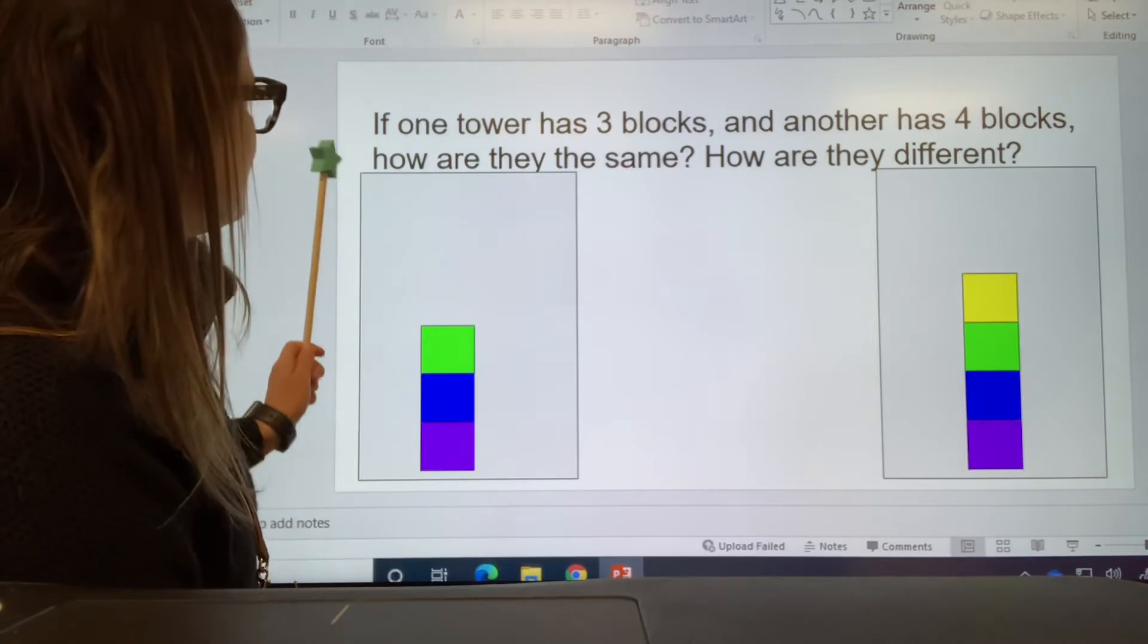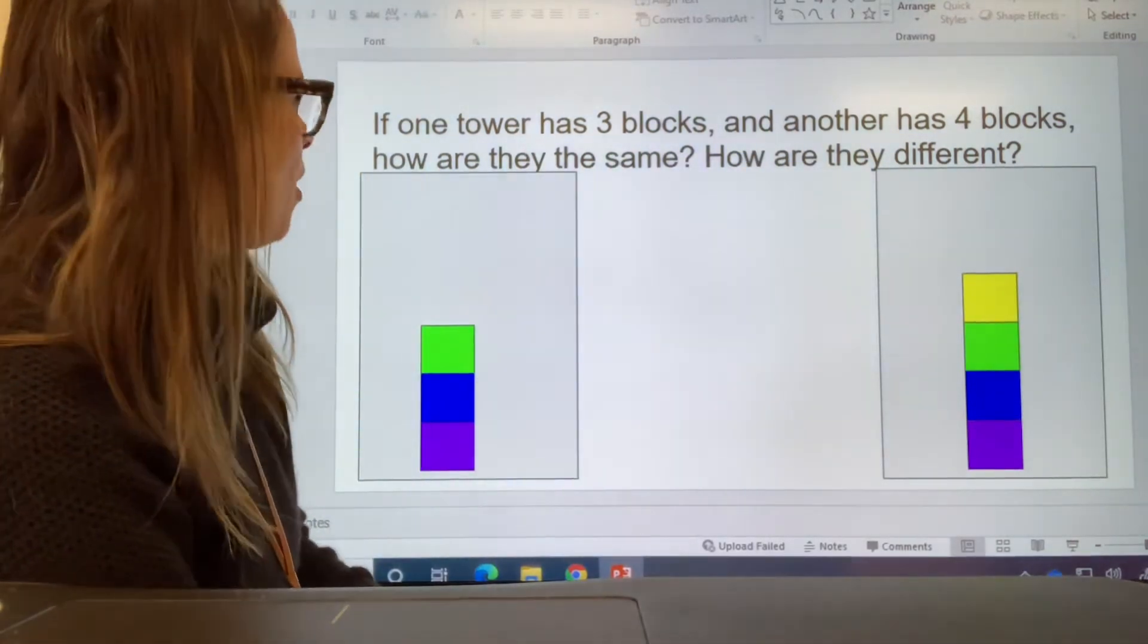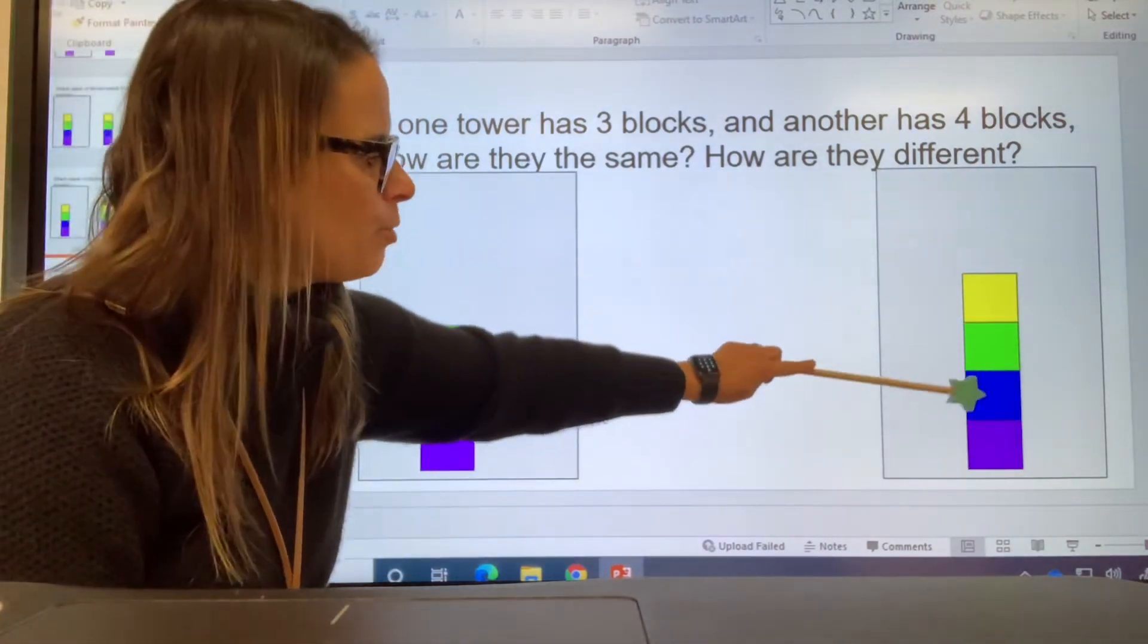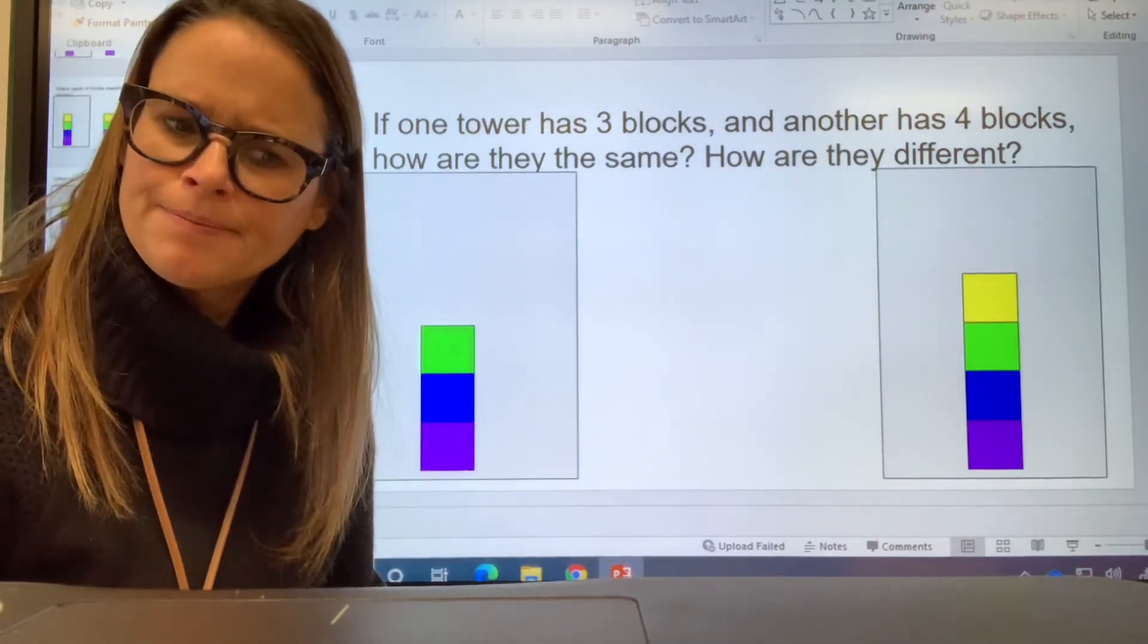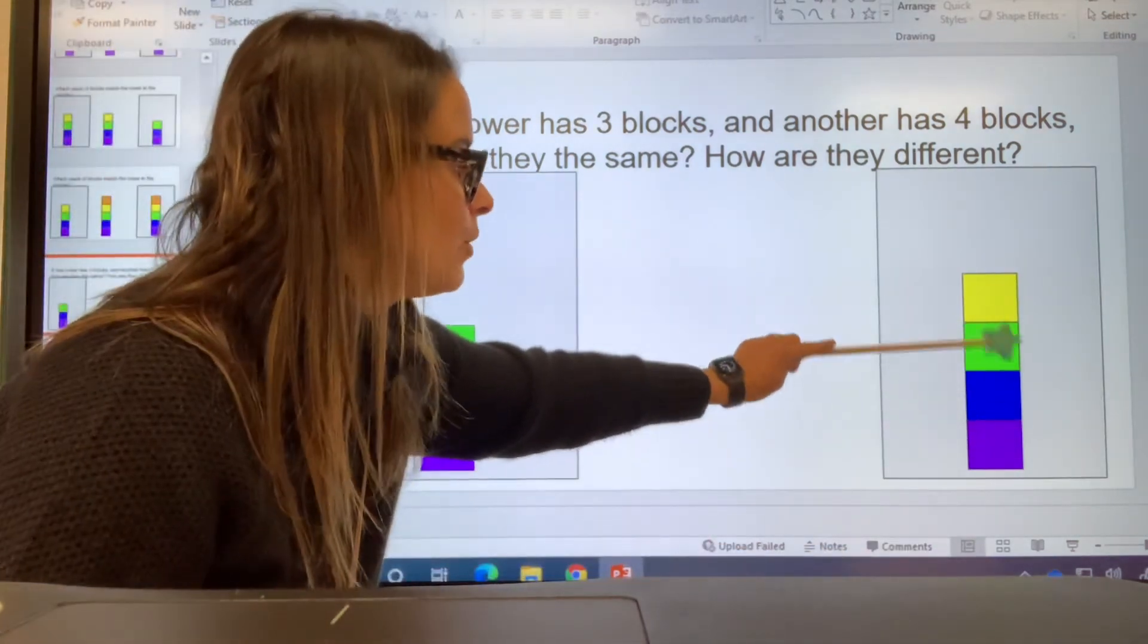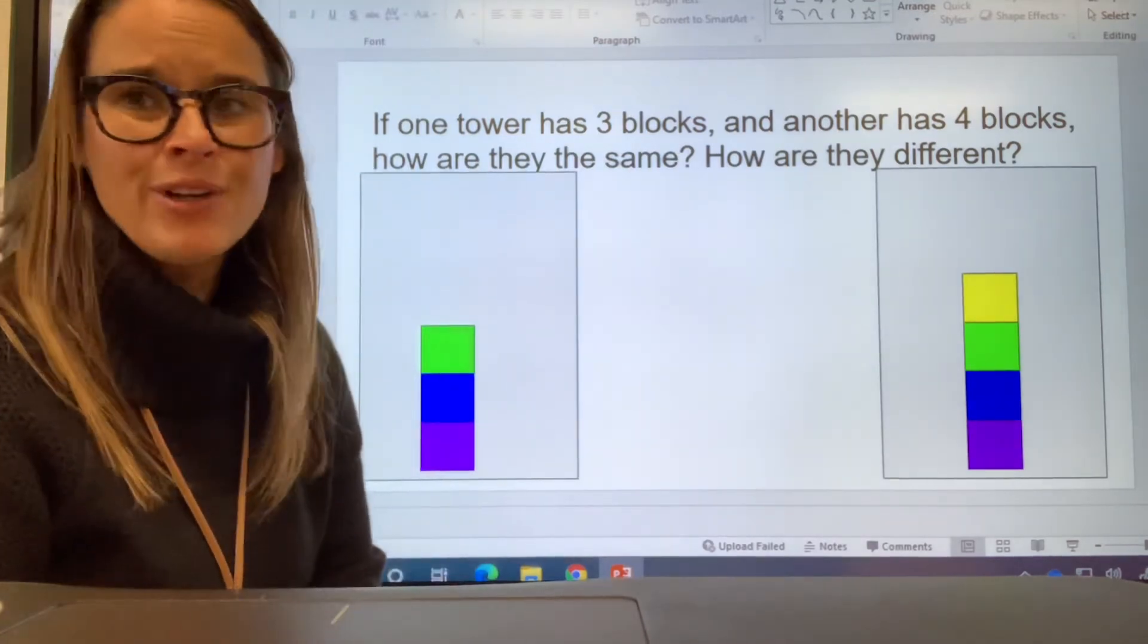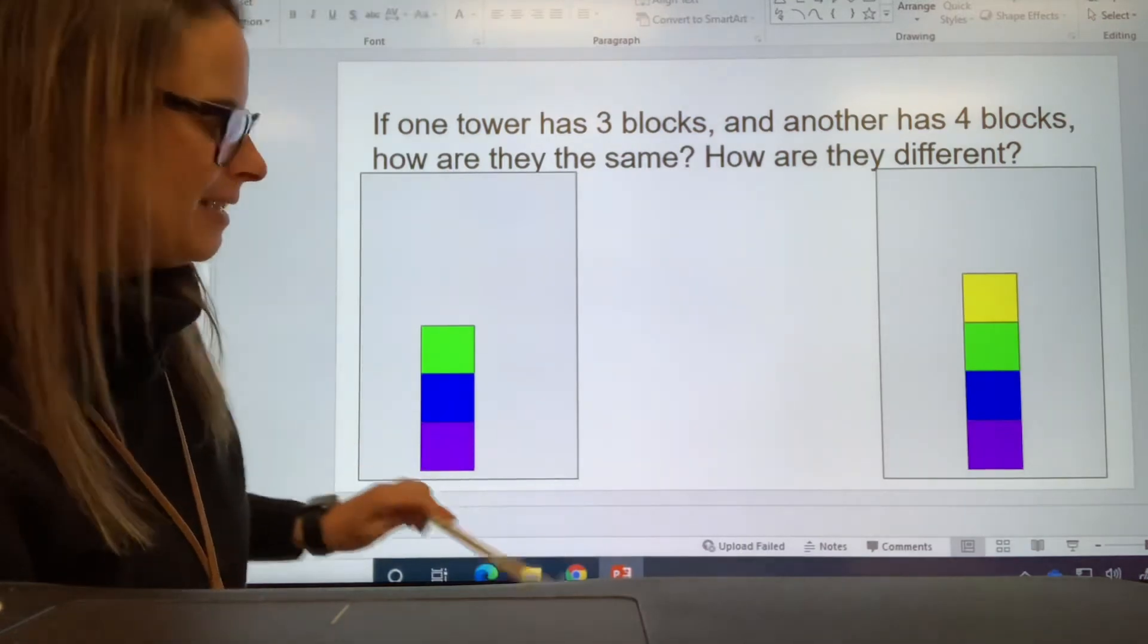Let's do one more. It says if one tower has three blocks and another tower has four blocks, are they the same? Hmm. Are these the same? This one has one, two, three, four. This one has one, two, three. Are they the same or are they different? You're right. They're different. They're not the same. They do have the same colors. Green, blue, purple. Green, blue, purple. But look it. This one has one more on the top. That one has a yellow block on top. It has one more. They're not the same. These blocks have more. This one has less. They're not the same.